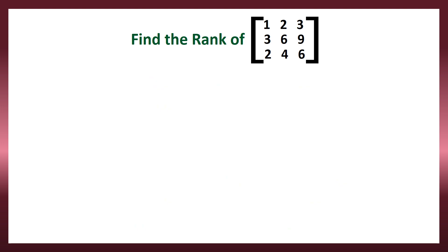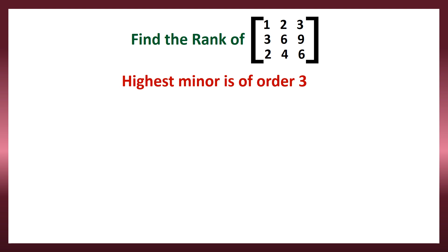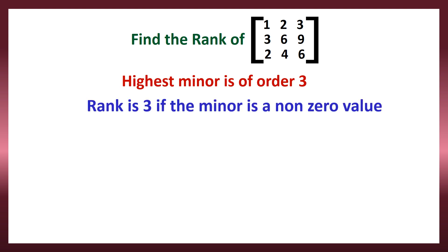Here we have to find the rank of the matrix [1, 2, 3; 3, 6, 9; 2, 4, 6]. The highest minor of this matrix is of order 3, so the highest rank we can give is 3. But we have to check whether it is actually 3. If the determinant is not zero it is rank 3, but if it is zero, we come down to the next lowest rank, which is 2. Let us find the determinant value to confirm.